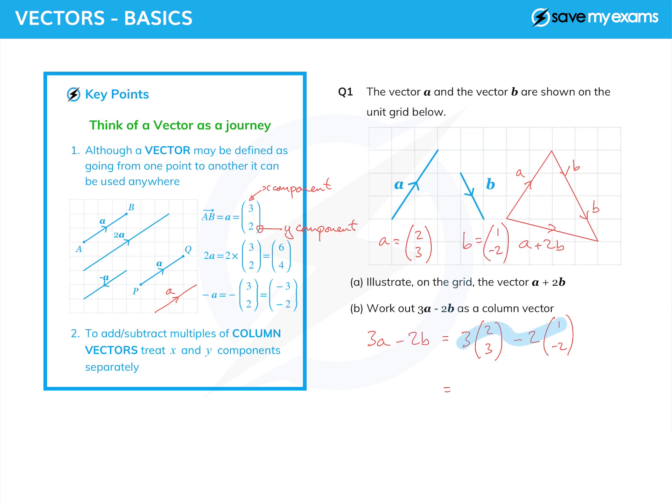So three times two is six, but we'll do it in stages: three times two minus two times one for the x component. And then for the y component, we do three times three minus two times minus two. So we'll write that in: three times three minus two times minus two. I'll just put that in a bracket to make it clear because of the minus sign.